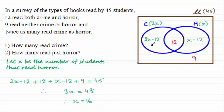So now we can fill in this region here. 2 times 16 minus 12 gives us 20. And this region here 16 minus 12 leaves us with 4.